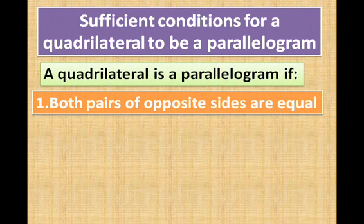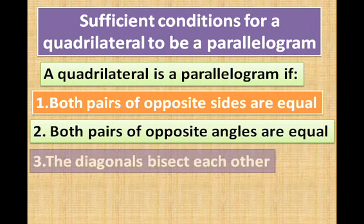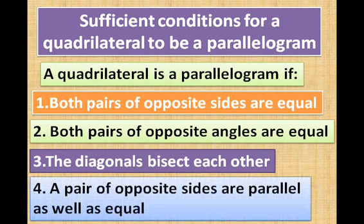Now we see the sufficient conditions for a quadrilateral to be a parallelogram. Number one: both pairs of opposite sides are equal. Both pairs of opposite angles are equal. The diagonals bisect each other. A pair of opposite sides are parallel as well as equal. If any one of these four conditions is satisfied, then we call that quadrilateral a parallelogram.